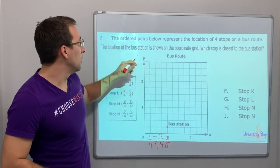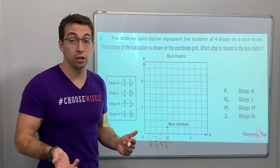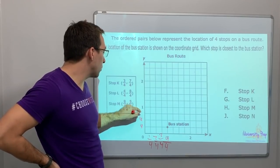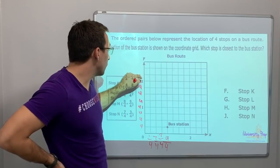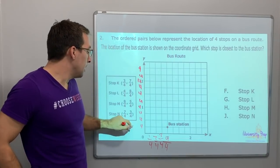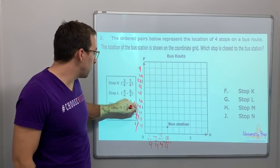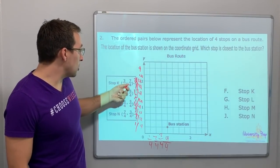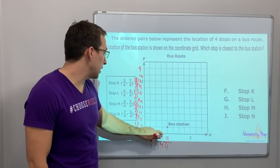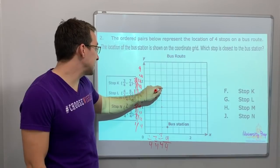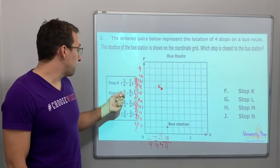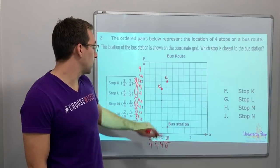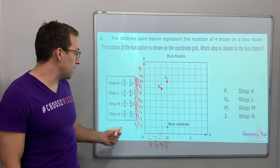You guys know your fractions — don't worry. Which stop is closest to the bus station? Let's go 3/4 and 7/4. If you keep it over 4, you guys see that? 1 fourths. So this is 3/4 and 7/4 — 3/4 right here: 1, 2, 3, 4, 5, 6, 7. That is K. And 4/4 and 8/4 — 4 and then 8. That is L.